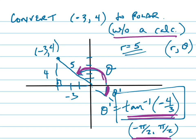So my answer, if I'm not using a calculator, is going to be 5, comma, tangent inverse of -4/3 plus π. That's going to be my answer.